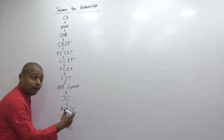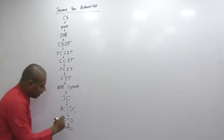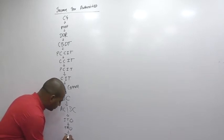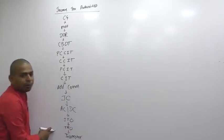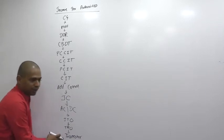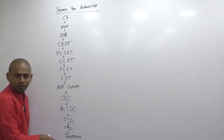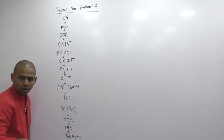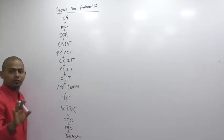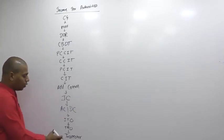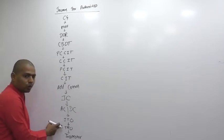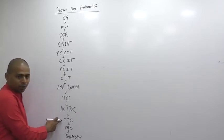Tax recovery officer. Inke niche inspector hote hai. Police department mein hote hai na inspector. So he is an inspector. Uske niche clerk, senior clerk, aise baatein hai. So at least up to inspector you should understand. To abhi reverse mein jaate hai. Inspector will report to TRO or ITO.